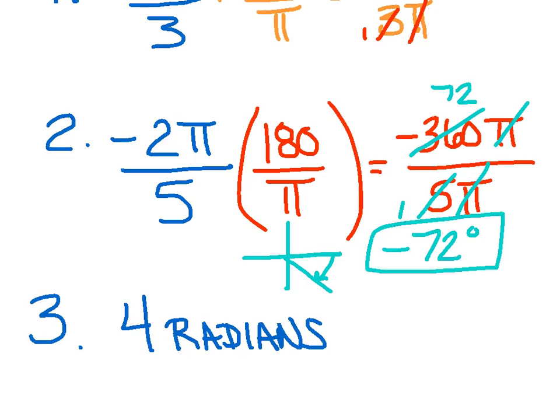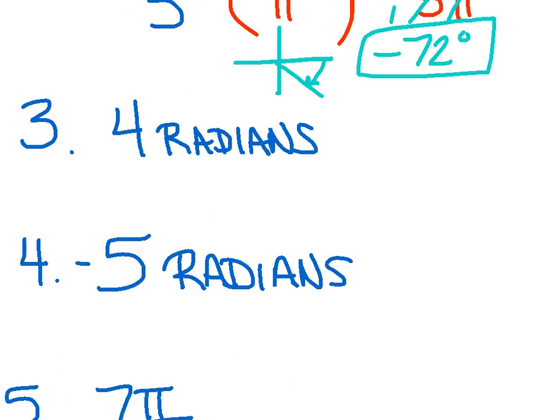All right, now number 3. They love just saying 4 radians. And it's very simple again. Just say to yourself, I want to convert 4 radians to degrees. So I want degrees. That means put the 180 on top over pi. Whatever you want goes on top.